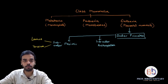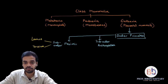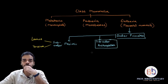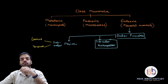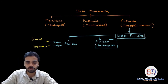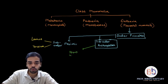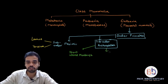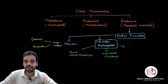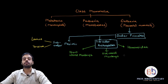Suborder Anthropoidea is very important because from here we show how monkeys, apes, and human beings formed. Anthropoidea is further divided into three groups: New World Monkeys, Old World Monkeys, and Hominoidea.